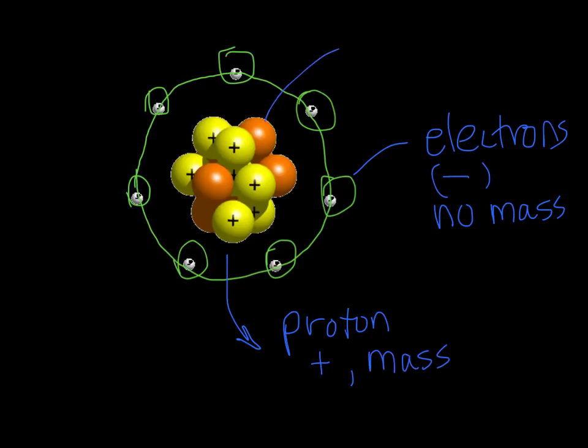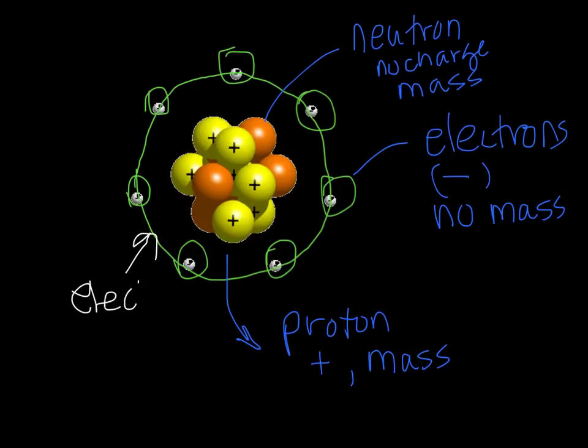The other particle in here is a neutron, and the neutron has no charge, and it has a mass. You also happen to have shown here the electron cloud, and where all these particles are in the middle, we have the nucleus.